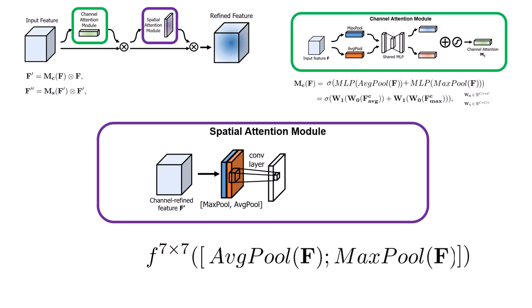So as usual, we have a sigmoid followed by that, and that basically outputs our spatial attention Ms.